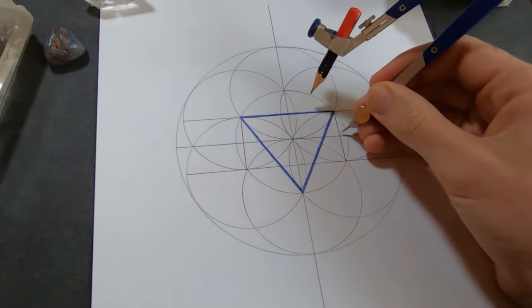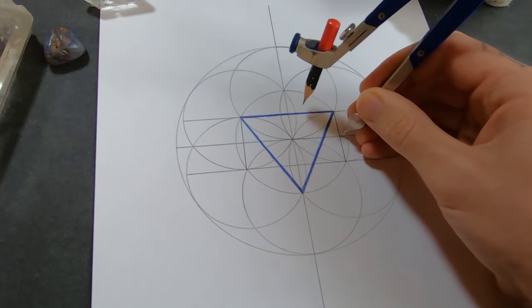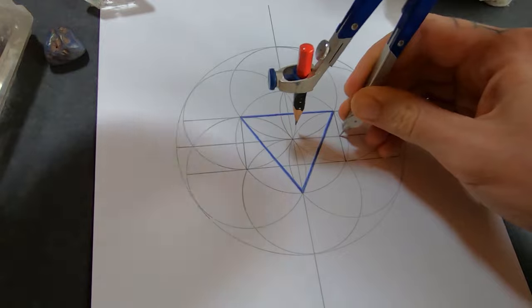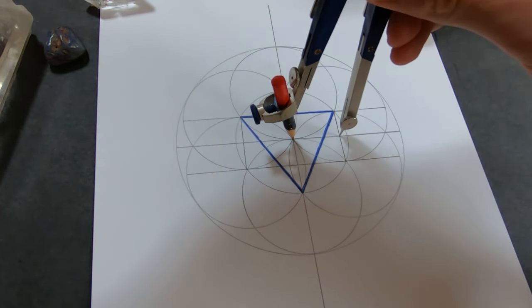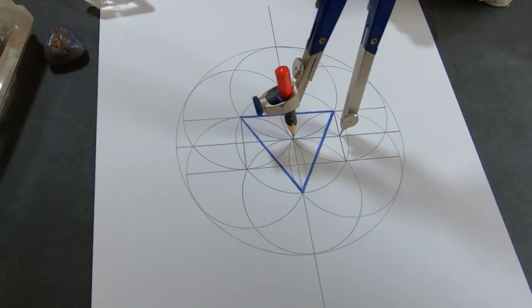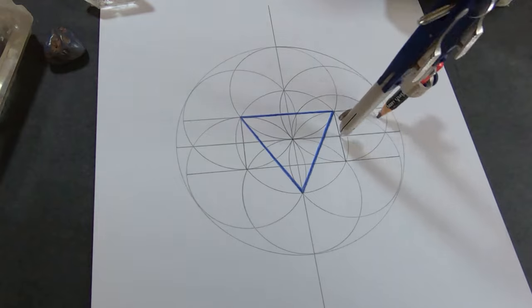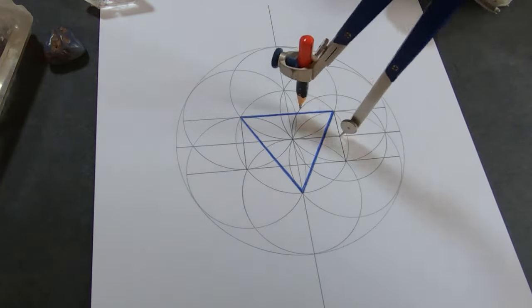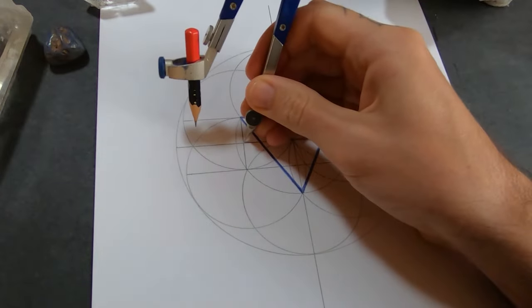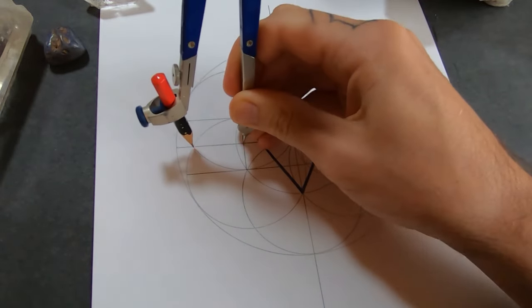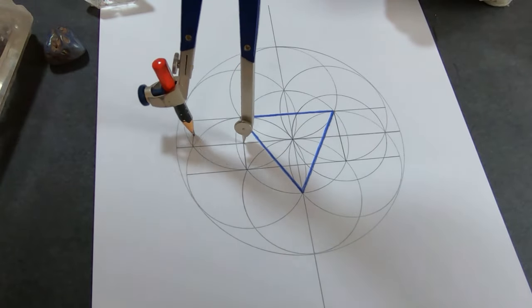Now I'm going to put my compass right on that point where the two lines cross and I'll set it so that the pencil meets the center. And I'll draw a circle. Then I'm going to do the same thing on the other side. This is going to be our guide for the two petals either side of the symbol.